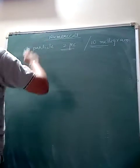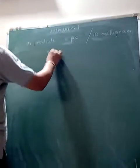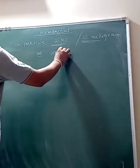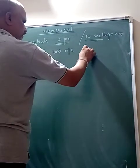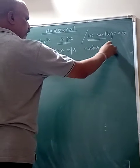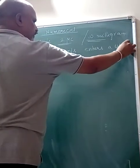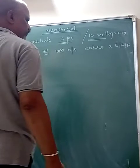It is moving with a velocity of, velocity is also given, 1000 meter per second enters a uniform electric field. I explained to you what is uniform electric field.